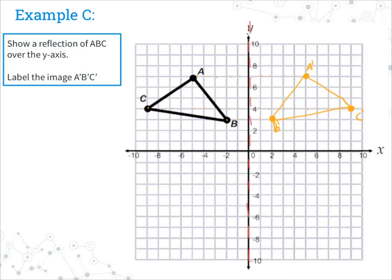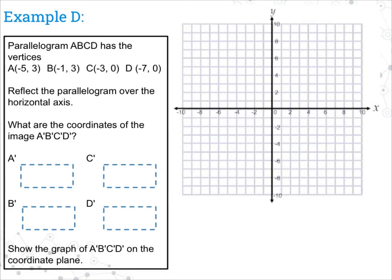Now let's move on to example D. Parallelogram ABCD has the vertices listed below. Reflect the parallelogram over the horizontal axis and find the coordinates of A prime, B prime, C prime, D prime, and show that shape on the graph. The horizontal axis is the x-axis, so we draw a dashed line over the x-axis. Since we don't have our shape drawn, we can either draw the original and reflect by counting, or we can understand the math involved in a reflection.